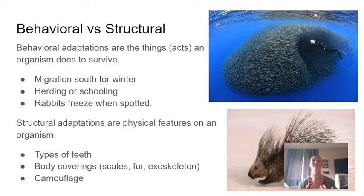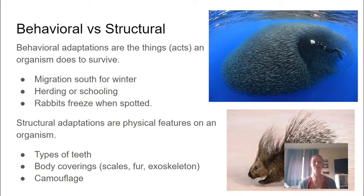Structural adaptations mean what physical features does the animal or plant have on their body. Maybe it's the type of teeth — if you have sharp canine teeth you're probably a predator, but if you have molar types you're probably more of an herbivore. Maybe it's your body coverings — things can have scales, fur, or quills. Sometimes bugs have exoskeletons; those hard crunchy shells help protect them. Camouflage is another nice structural adaptation, something an animal has to help it better survive in its environment.